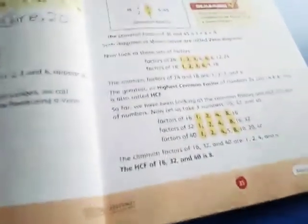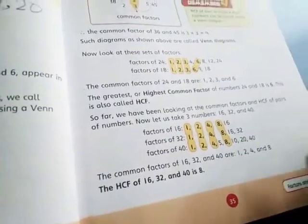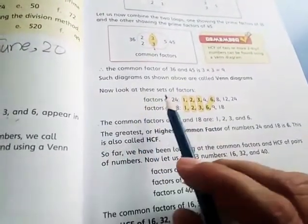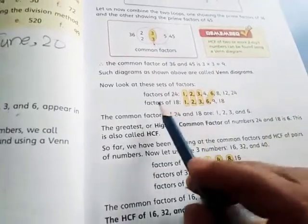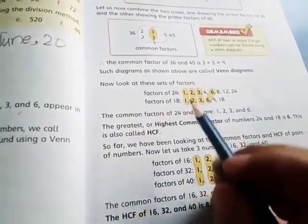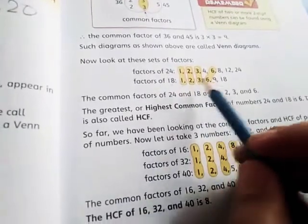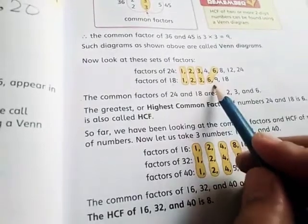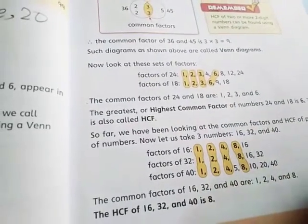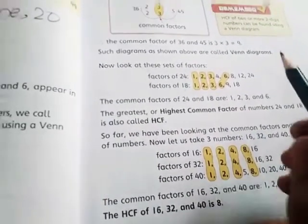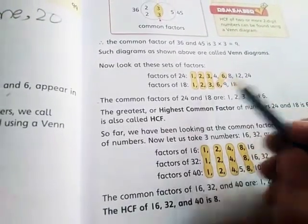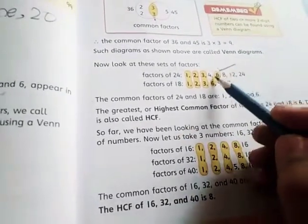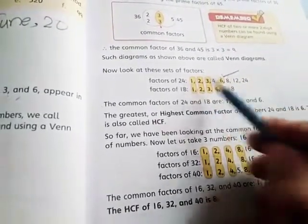Now come to page number 35. There is another question. Factors of 24 and factors of 18. As you can see, these are the common factors: 1, 2, 3, and 6. But if we find the highest common factor, the highest common factor is 6, which comes in both. The highest number in all these numbers.